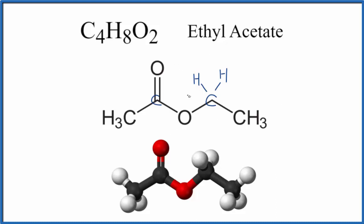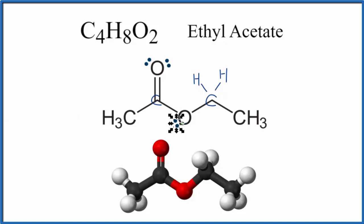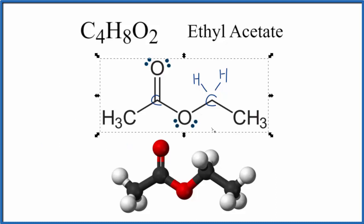One thing not yet written in are the lone pairs, so let's add those. Oxygen needs eight valence electrons for an octet, so we'll put those here — that oxygen now has an octet. Then for this oxygen over here, we put two more pairs down here, giving this oxygen an octet as well. We have 36 total valence electrons if you count them up, and now we've used all of them.